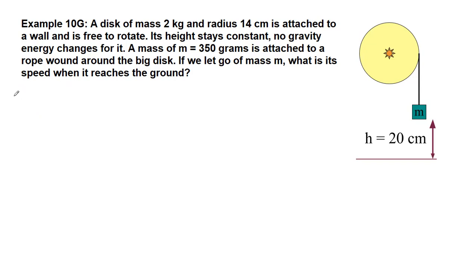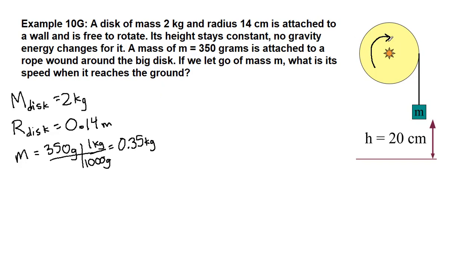So in this example we can start to write down the information we have because there's a lot of stuff to keep track of. We have the mass of the disk is 2 kilograms and the radius of the disk is 14 centimeters, which is 0.14 meters. It's going to be able to rotate, although it's stuck to the wall so it won't actually move from its current spot. Its height stays constant, no gravity energy changes for the disk. We also have a small hanging mass that's 350 grams. 350 grams, if we convert this the way that we've been training since Chapter 1, we get 0.35 kilograms.